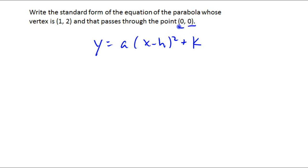I'm going to use this point for x and y. So 0 will equal a times 0 minus, there's h, 1 squared. And there's k, 2. So I get a plus 2 equals 0, so a equals negative 2. So here's our equation.